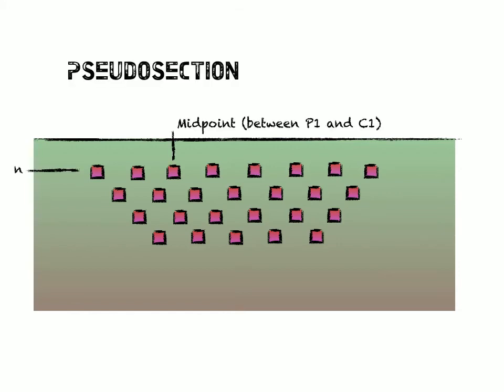Right, now if we continue that electrode jumping all the way, we'll end up with a data set that looks something like this. And this is something we call a pseudosection.